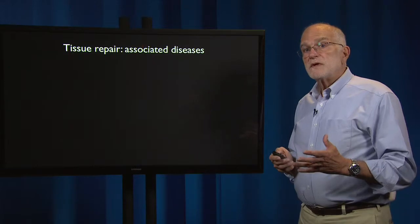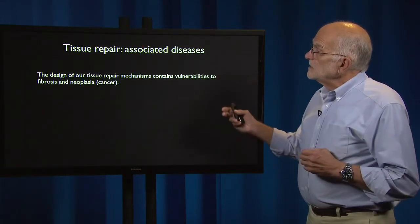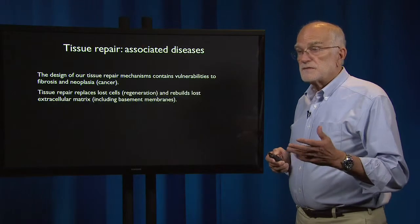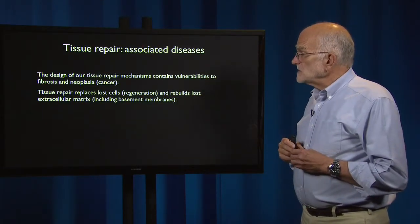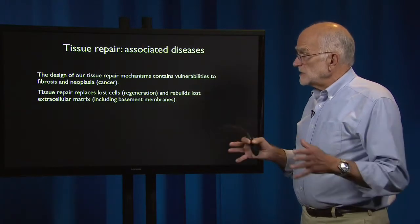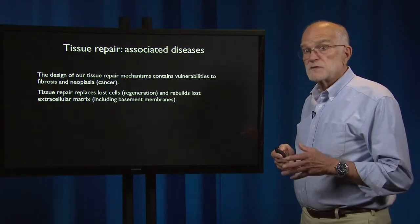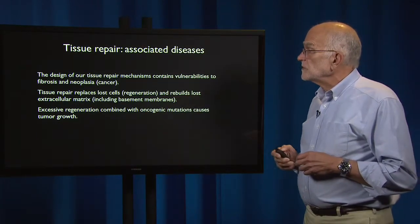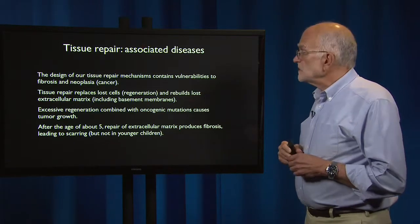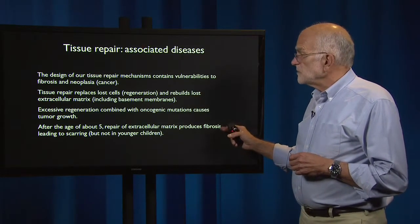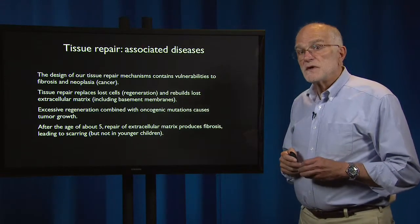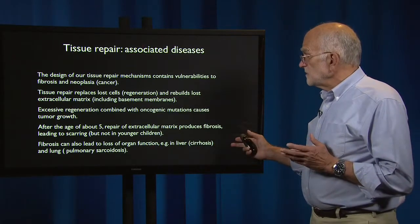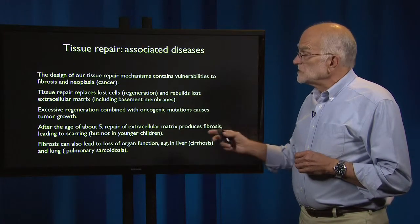Tissue repair is essential — we evolved stem cells to do it. The design of our tissue repair mechanisms contains vulnerabilities to both fibrosis and to neoplasia, or cancer. Tissue repair replaces lost cells through regeneration, and it rebuilds lost extracellular matrix, including basement membranes. Excessive regeneration combined with oncogenic mutations causes tumor growth. After the age of about five, repair of extracellular matrix produces fibrosis and scarring — something that does not happen in children younger than five. Fibrosis can also lead to loss of organ function, for example with liver cirrhosis or pulmonary sarcoidosis in the lung.